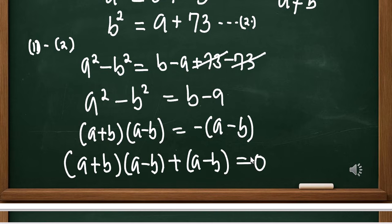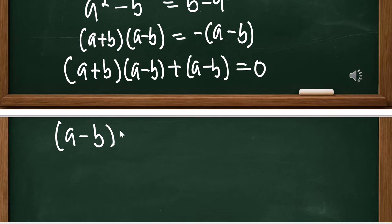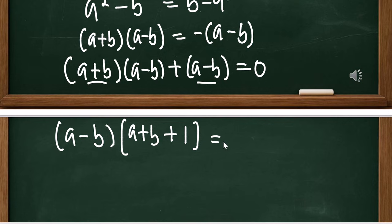So this is what we've got. From here, you can see that A minus B is common to both terms. Let's factor that out: A minus B is factored out, and in the parentheses we're going to have A plus B plus 1, which equals 0.